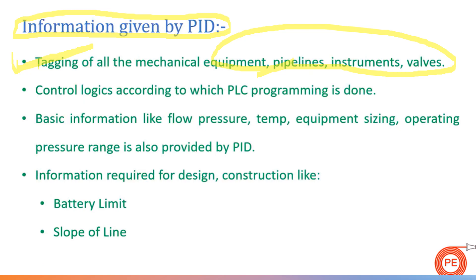A tag is basically the nomenclature — the name we give to a particular item in a plant. The tagging or nomenclature of every individual equipment or item that will be part of the plant is shown in the P&ID. The second thing is control logics. There are some dotted lines shown in P&IDs — those are control logics. The trip systems or on/off logics and on/off systems are shown with the help of dotted lines, and these dotted lines ultimately go to your PLC for PLC programming.